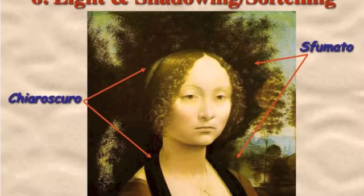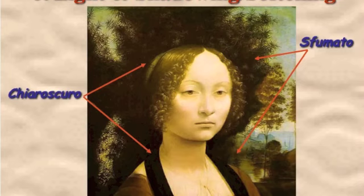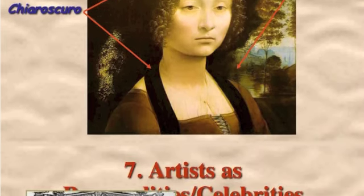The sixth characteristic is light and shadowing, and softening. Chiaroscuro is the contrast — you have very bright features on the forehead, for example, and dark features in the background. Sfumato is the softening of the edges, where the lines almost evaporate — there are no hard, clean lines. It's smoky, with no exact borders. That's also common in Renaissance art, and that's another da Vinci painting.